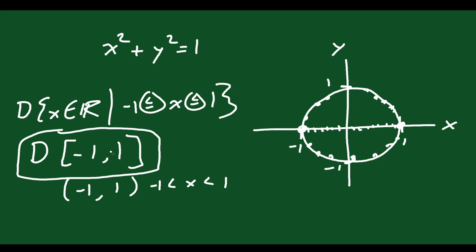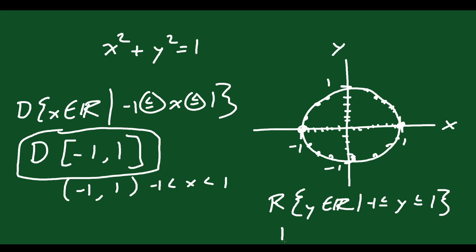What about the range for the circle? The range is going to be the same because your y values are all also between negative 1 and 1. So your range is y exists in the set of real numbers such that y is greater than or equal to negative 1 but less than or equal to positive 1 — written in interval notation as the closed interval from negative 1 to 1.